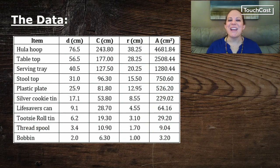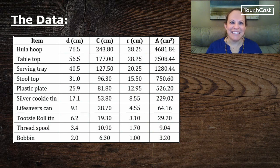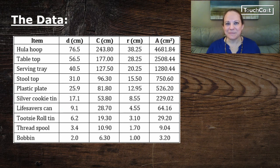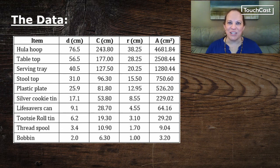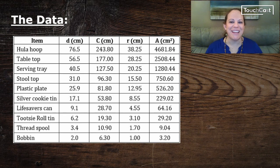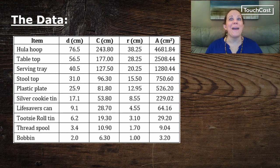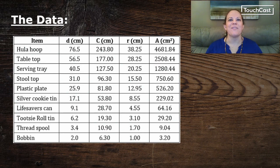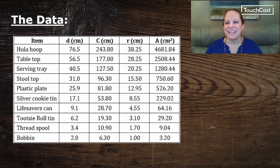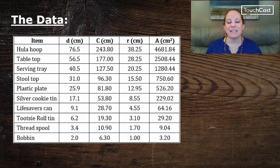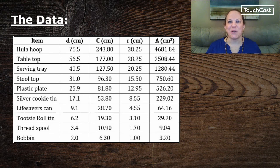So onto the fun part, here is the data I collected for my 10 items. And I'll give you a moment to look it over. Notice the astounding range of those areas from 3.2 square centimeters for my bobbin all the way up to nearly 4,700 square centimeters for the hula hoop. Those larger objects were really time consuming. And I'm so glad that I don't ever have to measure them again because I've now saved this data in the cloud so that it's recorded once.